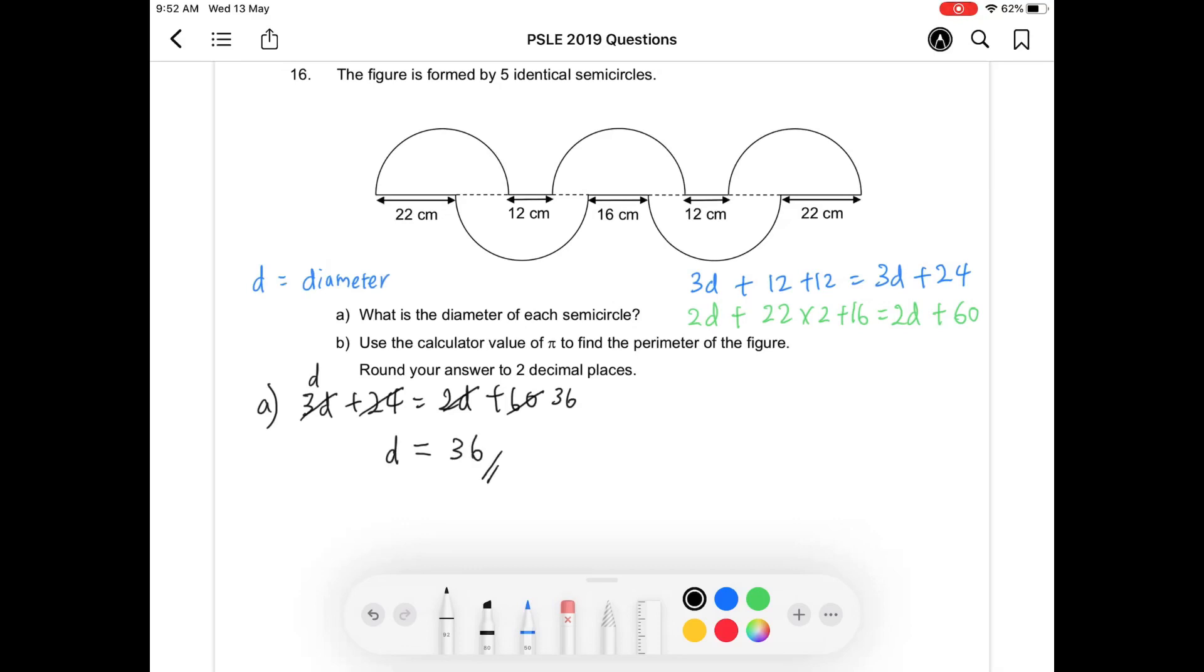Let's move on to part B. Part B, you are supposed to find the perimeter of the figure. So to do that, if you look closely, there are 5 semicircles. So 5 semicircles combined together will give you 2 and a half circles.